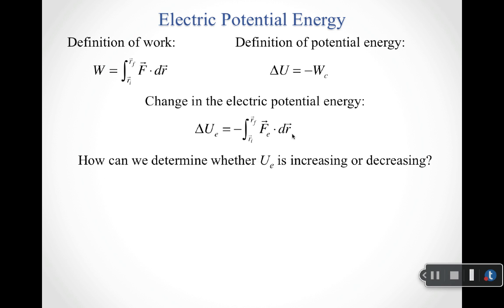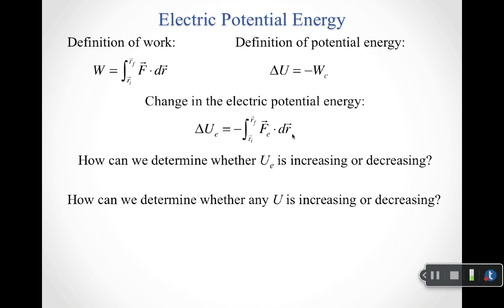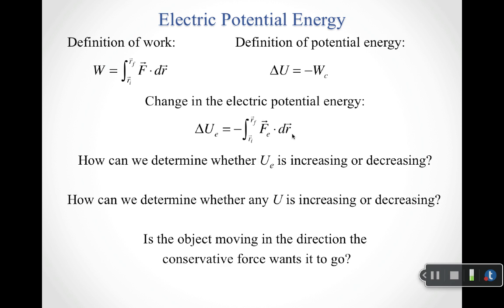The fundamental question becomes, conceptually, how can we determine whether the electric potential energy is increasing or decreasing? The key question to ask is: is the object moving in the direction the conservative force wants it to go? If it is, we're decreasing the potential energy. If it's moving opposite the direction the conservative force wants it to go, then we're increasing the potential energy.